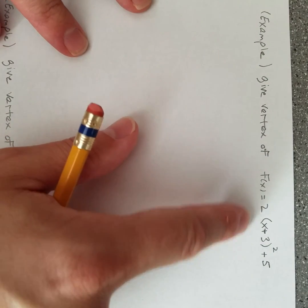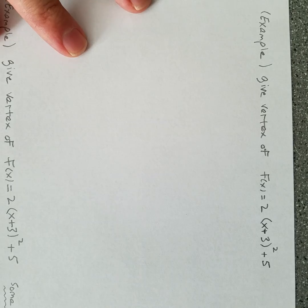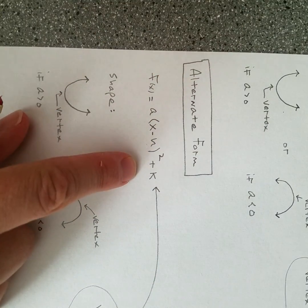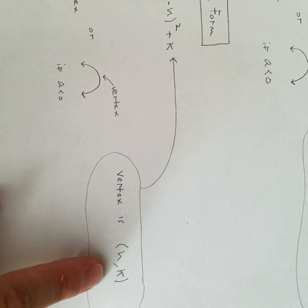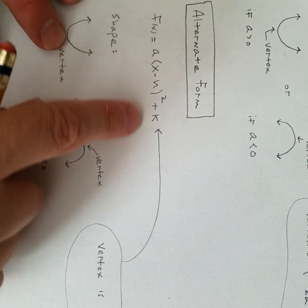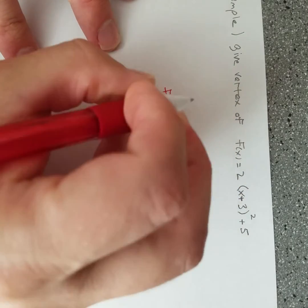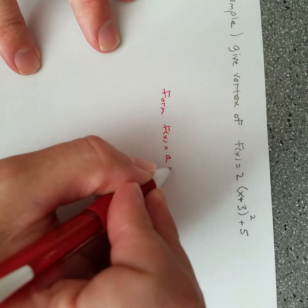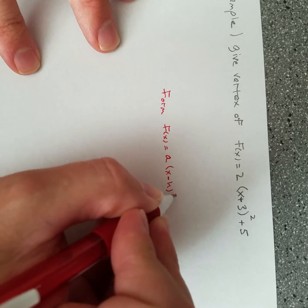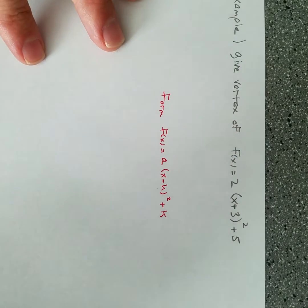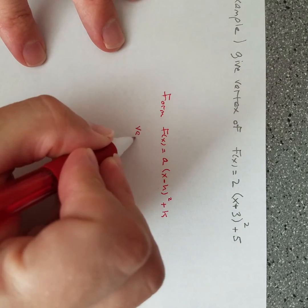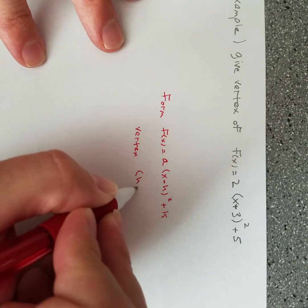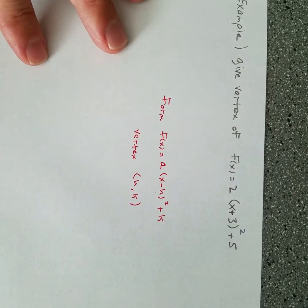Now let's try a problem. Here's a generic typical example: give the vertex of this. It's built just like that form, so I can read the vertex right out of the numbers present in that function. Let me write the form next to this: f(x) equals a times (x minus h) squared plus k. The vertex in that case is (h, k).